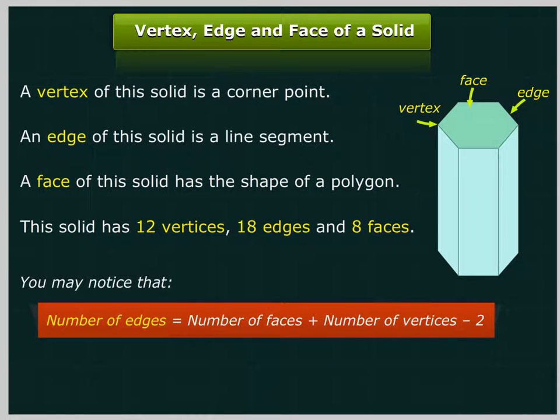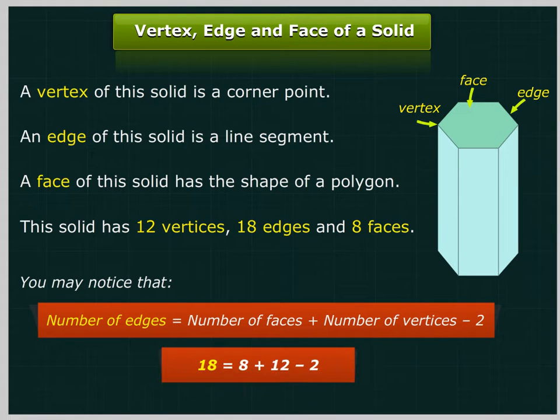Number of edges equals number of faces plus number of vertices minus 2. 18 equals 8 plus 12 minus 2.